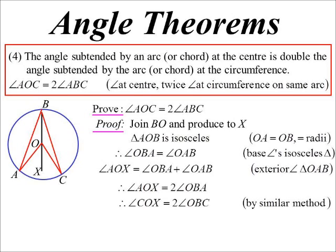I'll just say angle COX would also be twice angle OBC using a similar method. So if I add those two together, I get AOC is twice ABC. So the angle at the center is in fact twice the angle at the circumference.